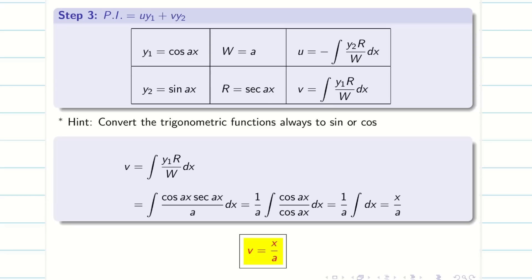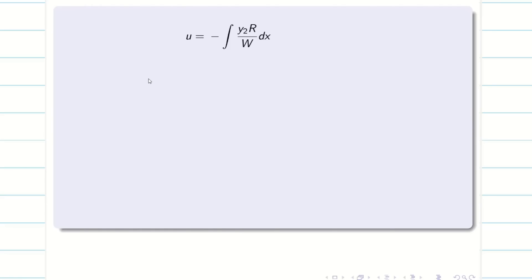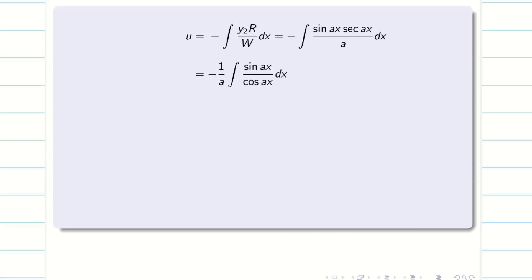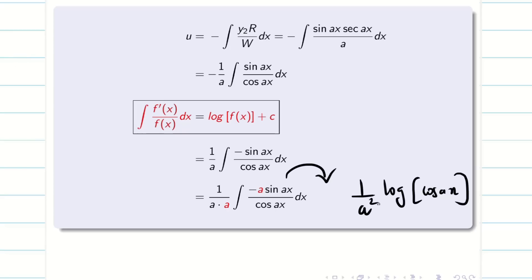Next, we have to find u because from the question, secant is given. Secant into cos is going to be simply 1. Therefore, we solved v first. Now, we have to go for u. u formula is minus y₂R divided by W into dx. y₂ is sin ax, R is secant ax divided by a. Now, take this a away. Minus 1/a, sin ax divided by cos ax. Now, I think the flash is going in your mind. Integral f(x) in the numerator f'(x) dx is going to be log f(x) plus c. Now, we see cos ax is there. Cos ax differentiation is minus a into sin ax. Therefore, I am taking this minus inside. But a is missing. Therefore, I multiplied by a and divide by a. This part will become log cos ax. 1/a².